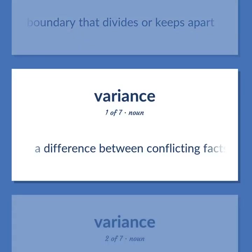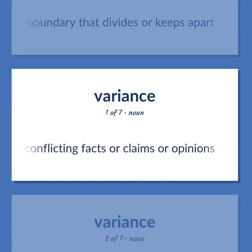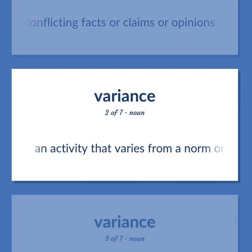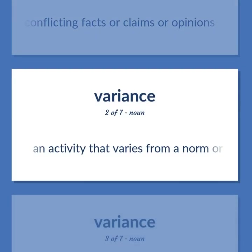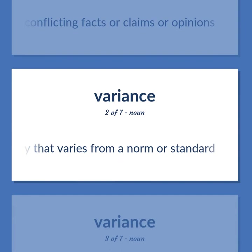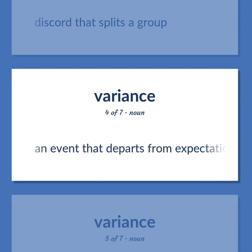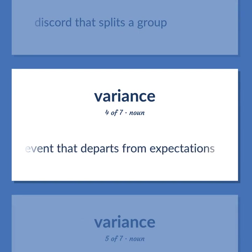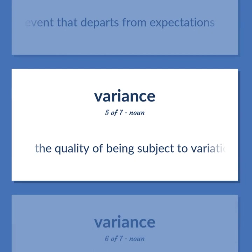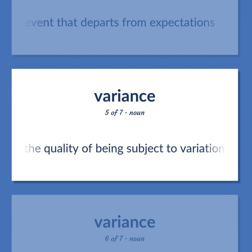Variance: A difference between conflicting facts, claims, or opinions. An activity that varies from a norm or standard. Discord that splits a group. An event that departs from expectations.